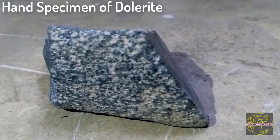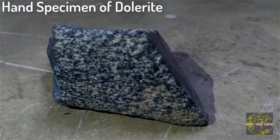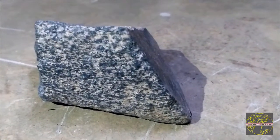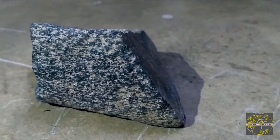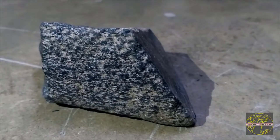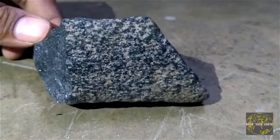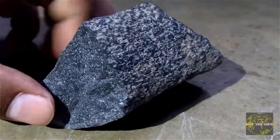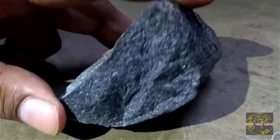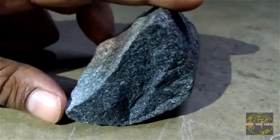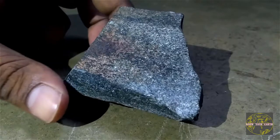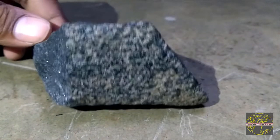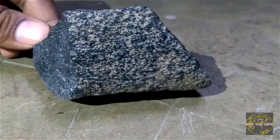As we can see, it is mesocratic in color and is composed of medium-sized grains as it is emplaced at shallower depths. Mineralogically, it is composed of pyroxene, plagioclase feldspar, and opaque minerals. Both ophitic and subophitic textures are common in dolerites. In this particular hand specimen, directive textures are also observed.